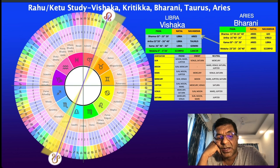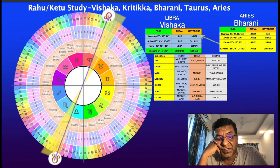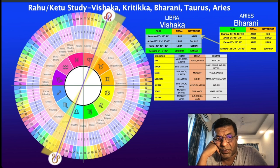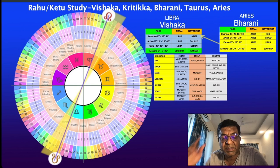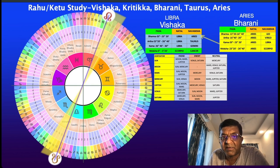Next, we'll take up Swati Nakshatra — Rahu in Swati Nakshatra — and it will transit through Ashwini and Bharani. Meanwhile, take care and be safe.